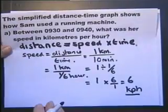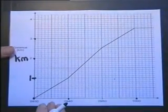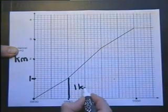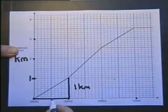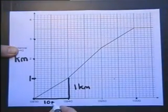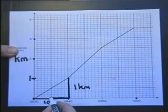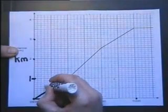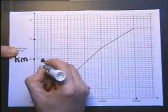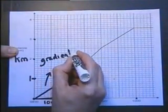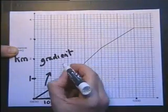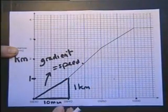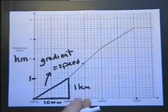Another thing to notice: when we worked out that value as 1 kilometer and that value as 10 minutes, and we put that value over that value, we're actually finding the gradient of the line. We need to appreciate that the gradient on a distance-time graph equals speed.